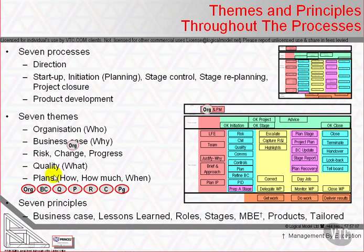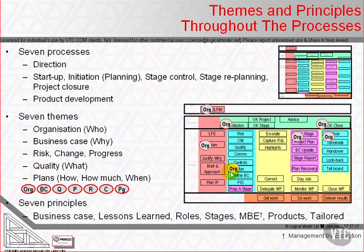Organization starts in starting up a project. The initial element of organization is to appoint the executive and the project manager and then build the team, which is ratified by the project board on their first decision to authorize initiation. Initiation takes a fresh look at who's assigned to what roles in order to create the plans and the strategies, particularly ensuring that all activities that need to be performed have been assigned an owner. As we get to the end of each specialist stage, we review whether we have the right roles and the right people performing them with the right amount of time allocated to them — a periodic refresh at the end of every stage.